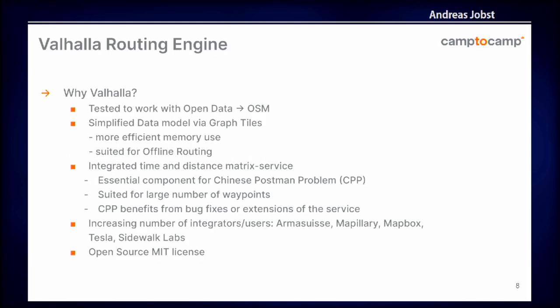Why did we choose Valhalla? It's been tested to work well with OpenStreetMap data, which we knew we were going to use. The data model is quite efficient in terms of memory use, and Valhalla is suited for offline routing. Also, the Chinese Postman Problem solution consists of different algorithms, and one of them — the time and distance matrix service — is already part of Valhalla, so we could use it without changing hardly anything. And of course, being a substantial part of the Chinese Postman thing, we'll benefit from bug fixes and extensions in the future.